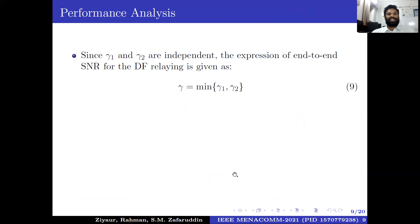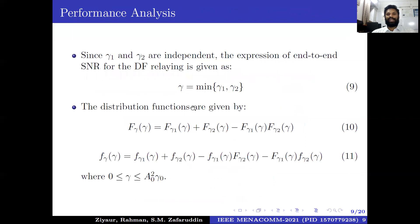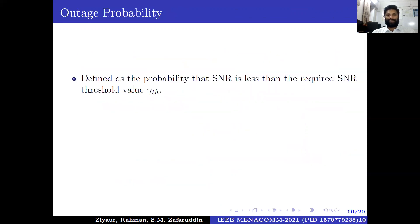For performance analysis, we derive the end-to-end SNR of the DF relay link, given by Equation 9 as the minimum of γ₁ and γ₂. The distribution functions given by Equations 10 and 11 are the PDF and CDF for the end-to-end SNR, which we use to derive outage probability, average SNR, and ergodic capacity.